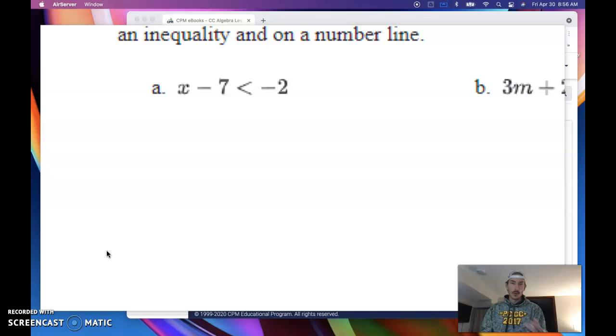Our job is just to do some solving. We're going to start with A. We solve these things like we solve an equation. We are using inverse operations. So our goal is to isolate the variable. My variable is X. I want to get that thing by itself. So I'm going to use the opposite of subtracting 7, which is adding 7 to both sides of my inequality. And I get X is less than 5.